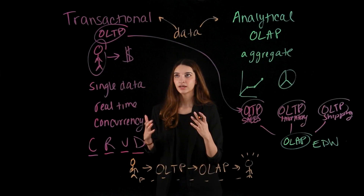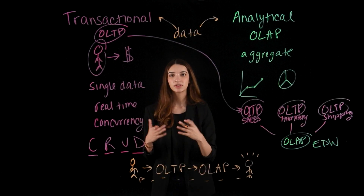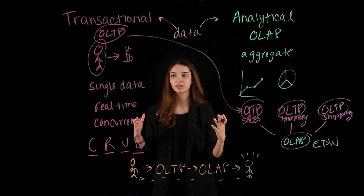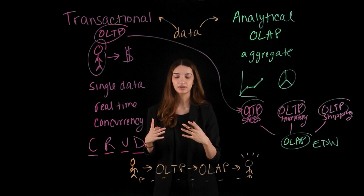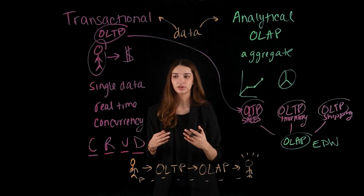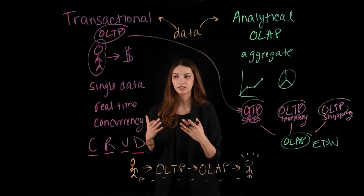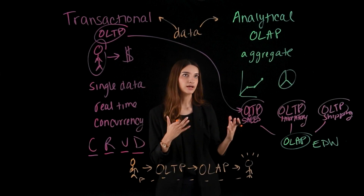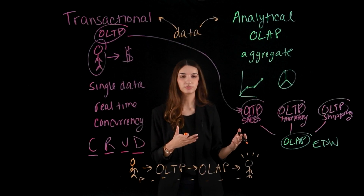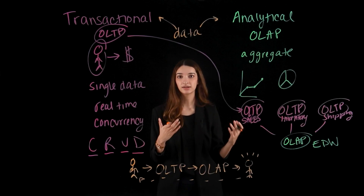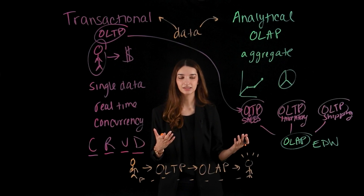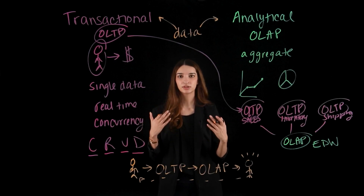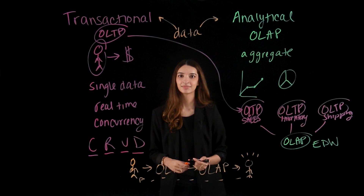So transactional information really describes what is happening in an organization — it's all this data being generated to describe the processes. Whereas analytical information is more geared towards analysis. And both of these work together to drive data-driven insights.